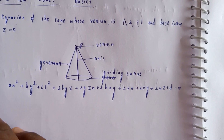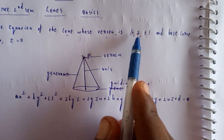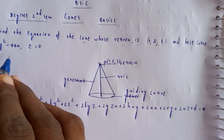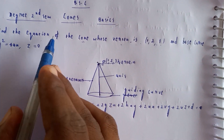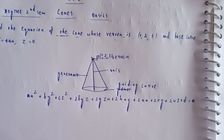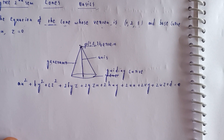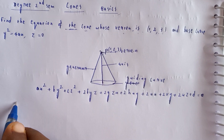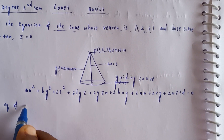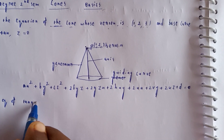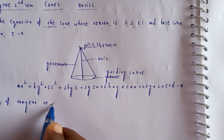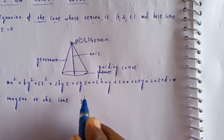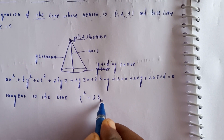Now for our problem: the vertex is at (1, 2, 3). The base curve is the guiding curve. We also need to find the equation of the tangent to the cone.